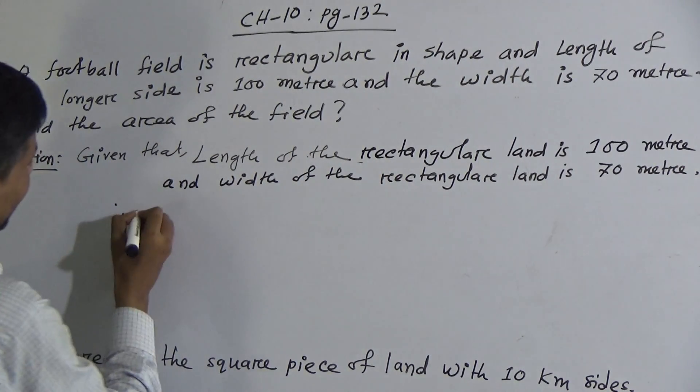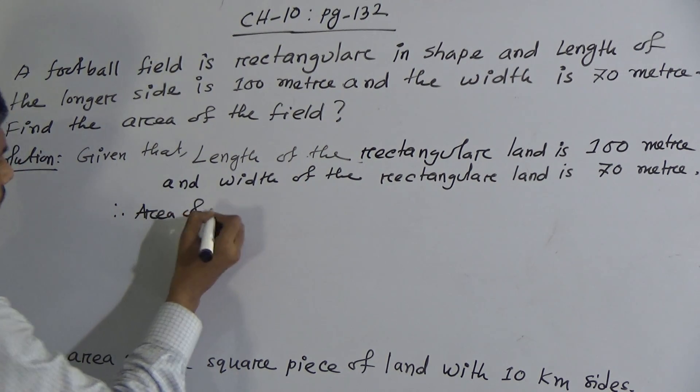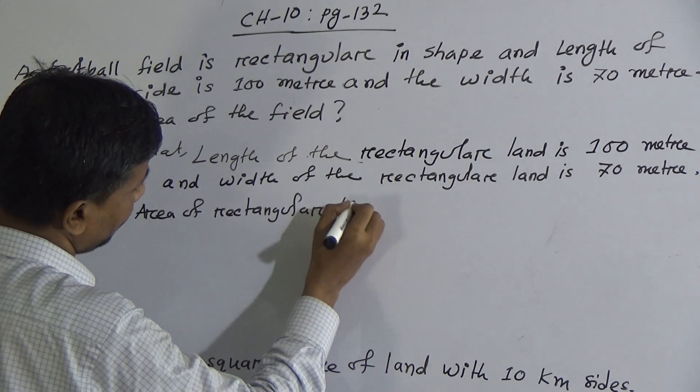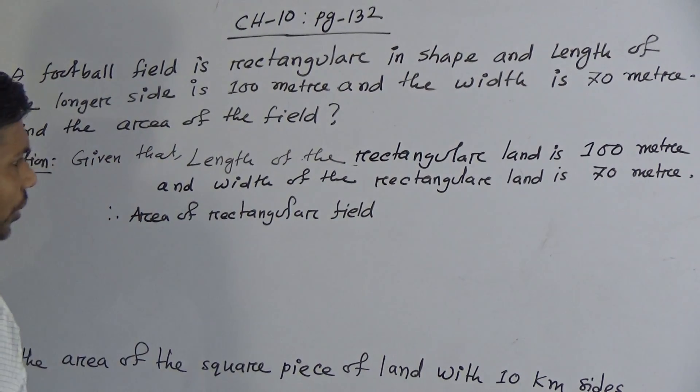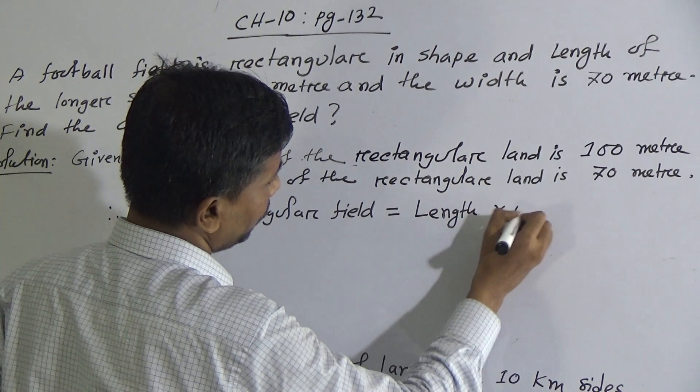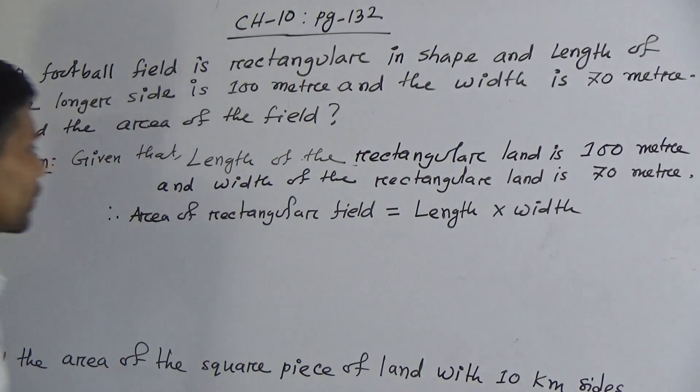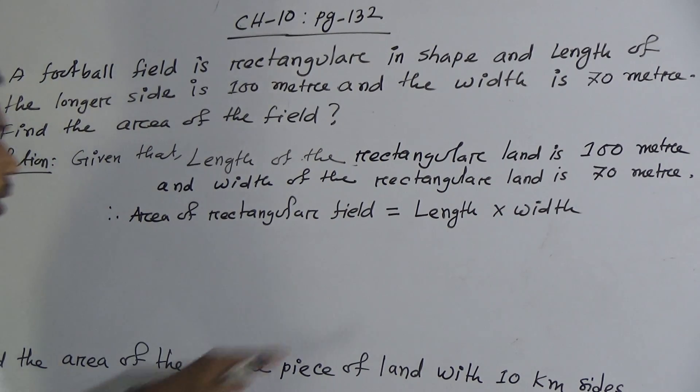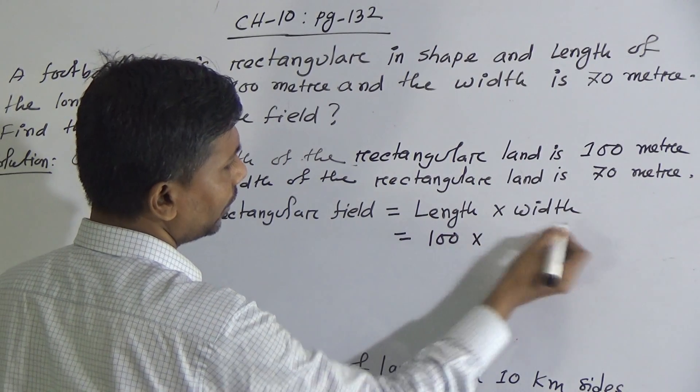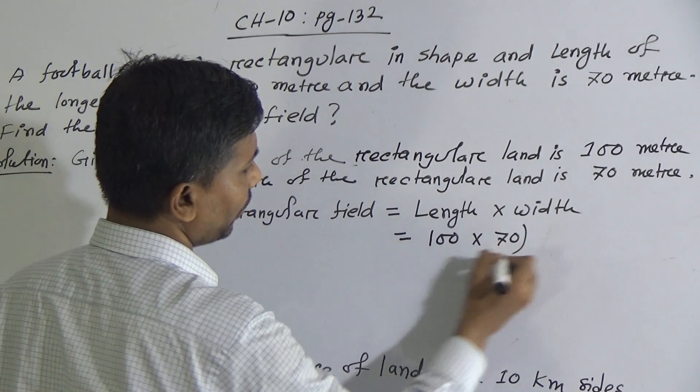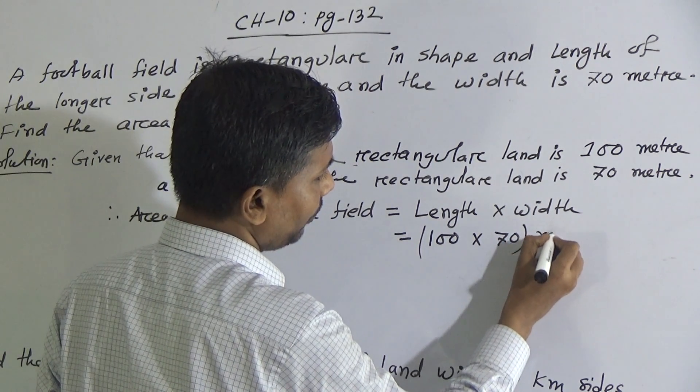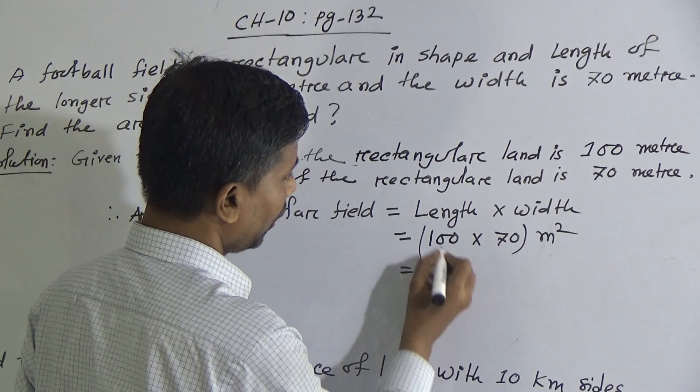Therefore, the area of the rectangular field is equal to length into width. You see, length here is 100 meter and width is 70 meter. And write here, square meter, or in short form, M square. Now, multiply 7, 1, so 7, how many zeros? 1, 2, 3.